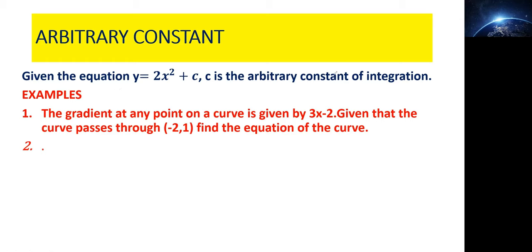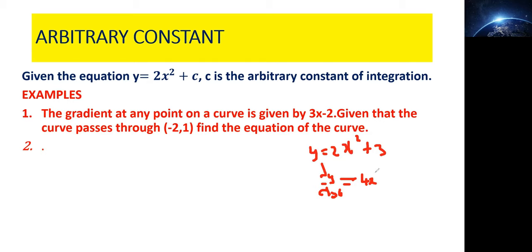If you have this function y = 2x² + 3, and you are asked to differentiate it, then dy/dx equals — applying the power rule — you drop the power and multiply by the coefficient: 2 times 2 gives 4, then subtract 1 from the power, leaving x to the power 1. When you differentiate the constant the answer is 0, so dy/dx = 4x.